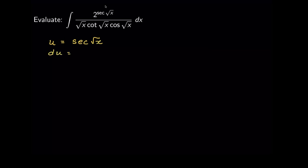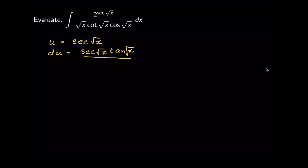We need to make sure the derivative of u can be found in the integrand. The derivative du is: secant of square root of x times tangent of square root of x, times the derivative of square root of x — do not forget we are using the chain rule, since we have two functions, secant and square root of x. The derivative of secant is secant tangent, and the derivative of square root of x is 1 over 2 square root of x, times dx. We want to confirm this expression is already waiting in our integrand.